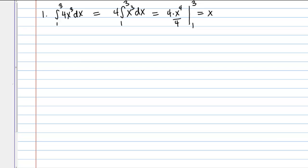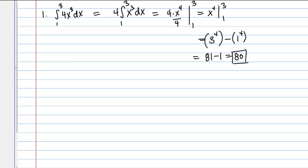This simplifies to x to the fourth evaluated from 1 to 3. To evaluate this, I start by plugging in the upper bound, 3. That's 3 to the fourth minus, then plugging in the lower bound, 1 to the fourth. 3 to the fourth is 81, 1 to the fourth is 1, so you get 81 minus 1 which is 80. 80 is the value of this definite integral.